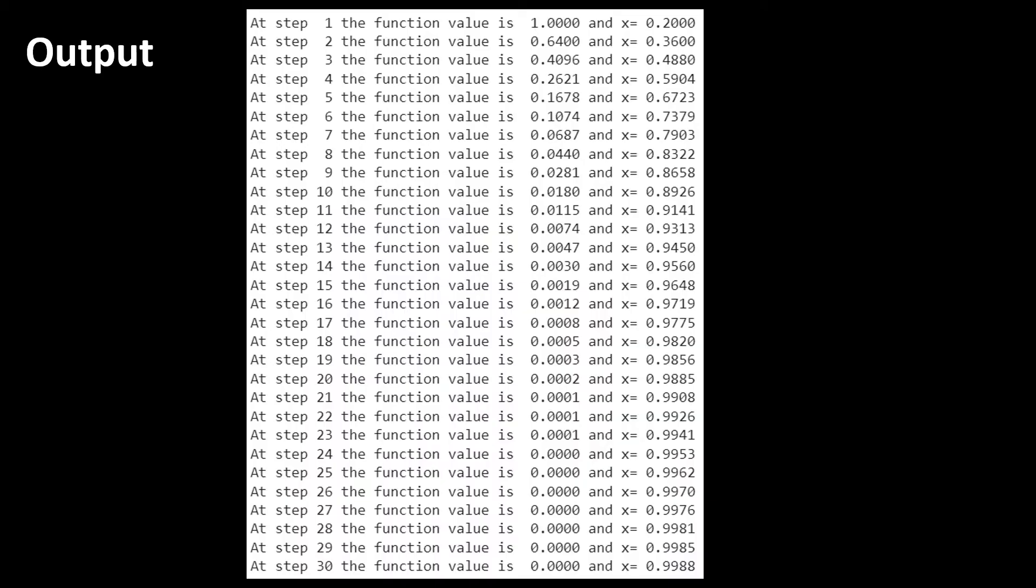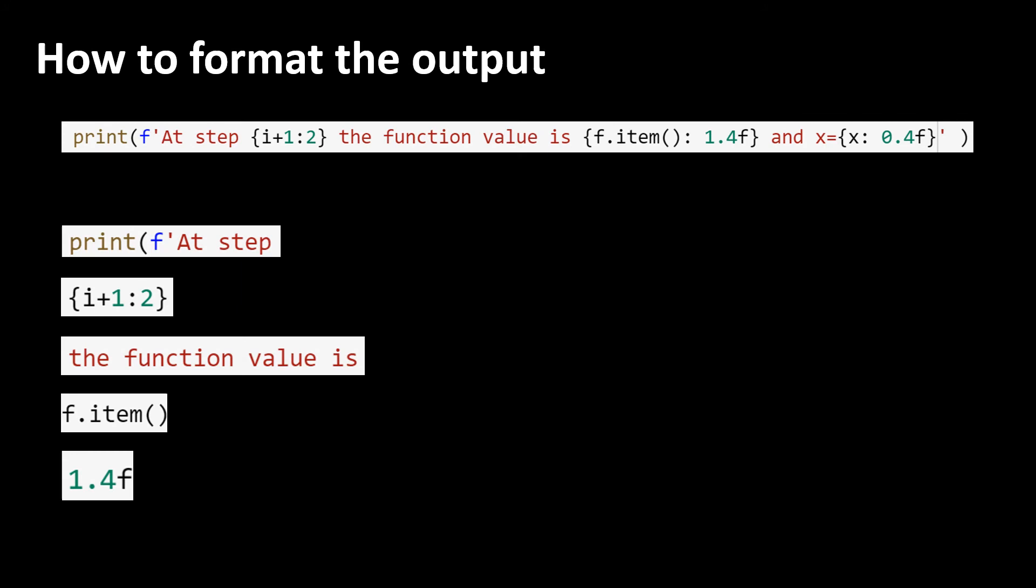Now let us see the output. As you can see the value of f is decreasing as the number of iteration increases and x is getting closer and closer to 1 as the number of steps increase. I formatted the output using this line of code.